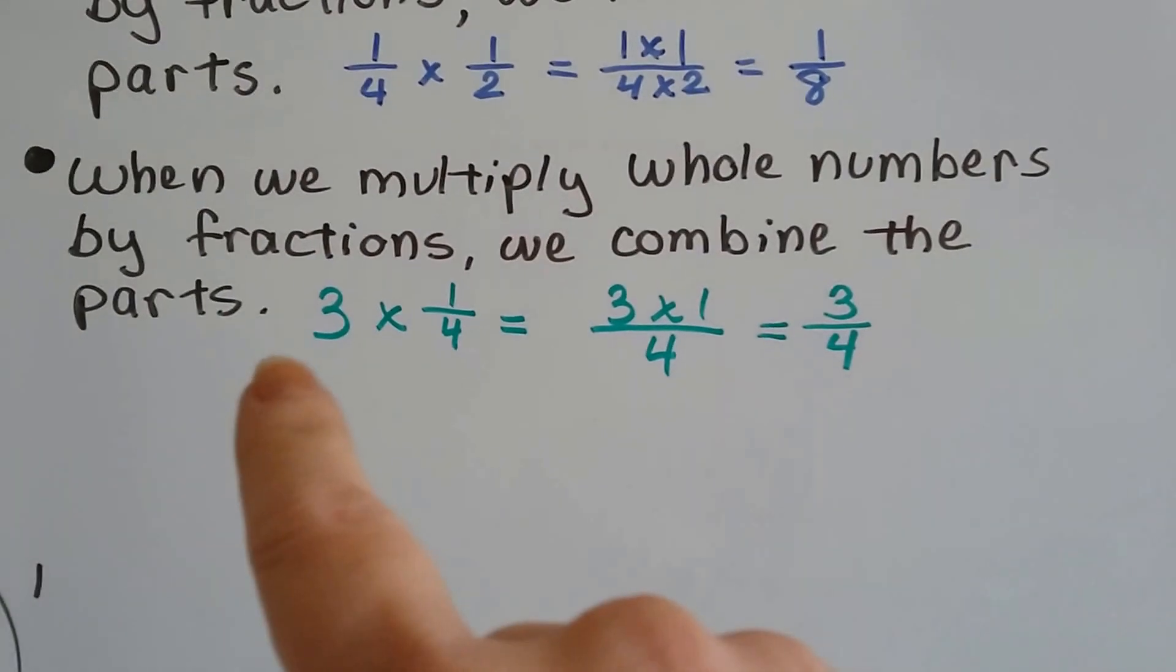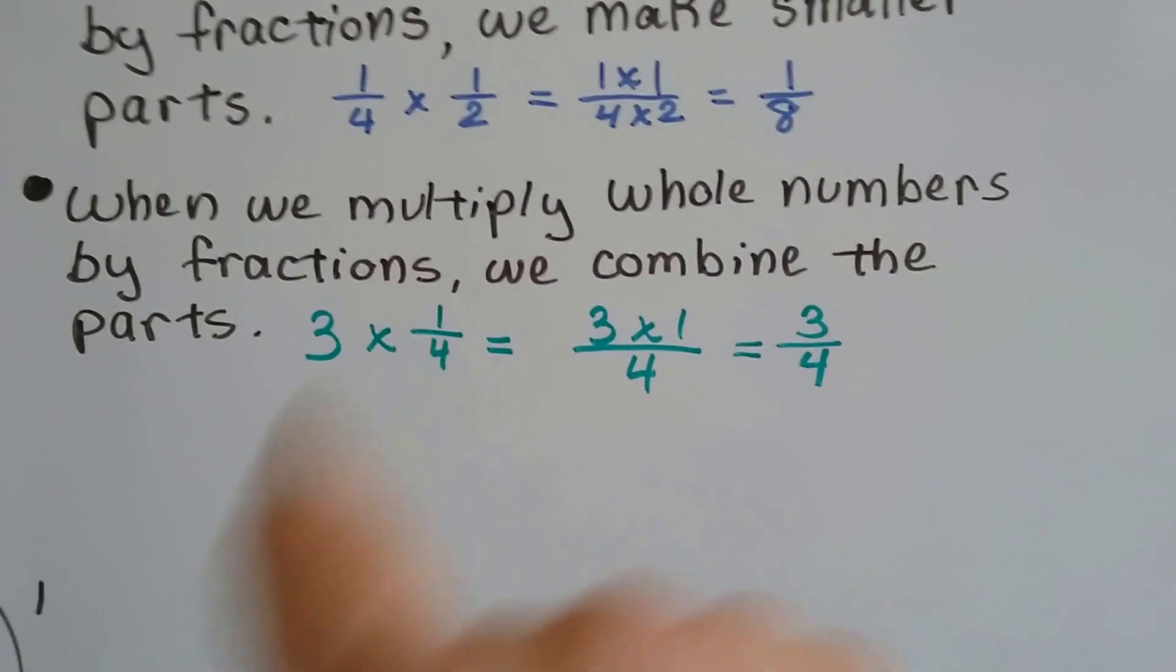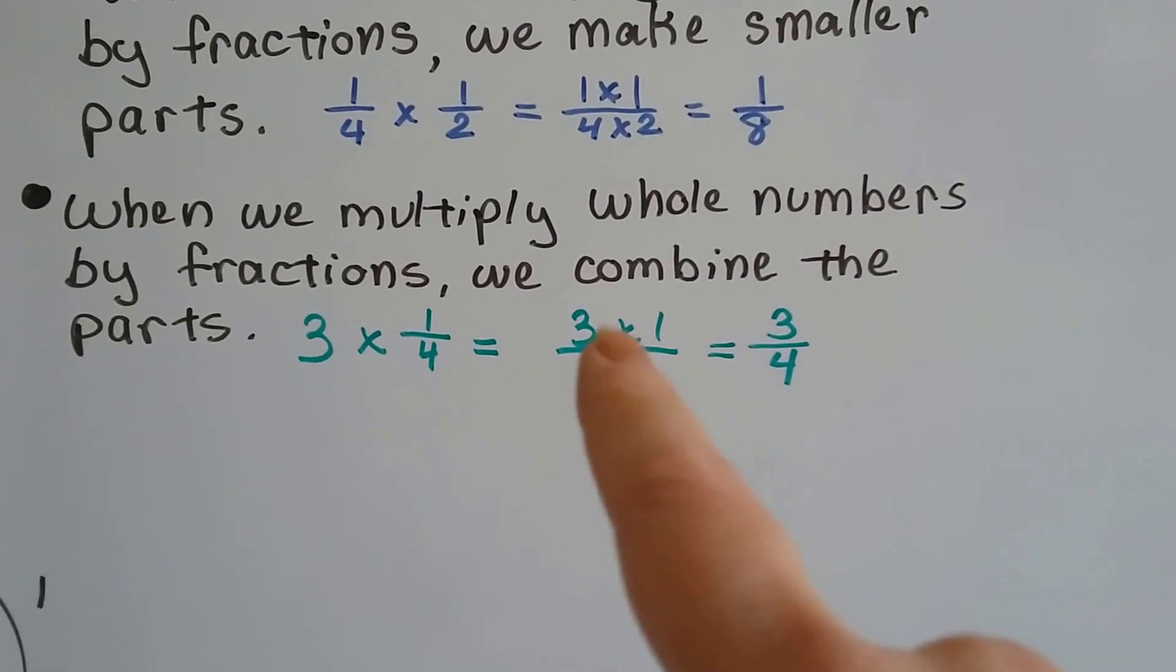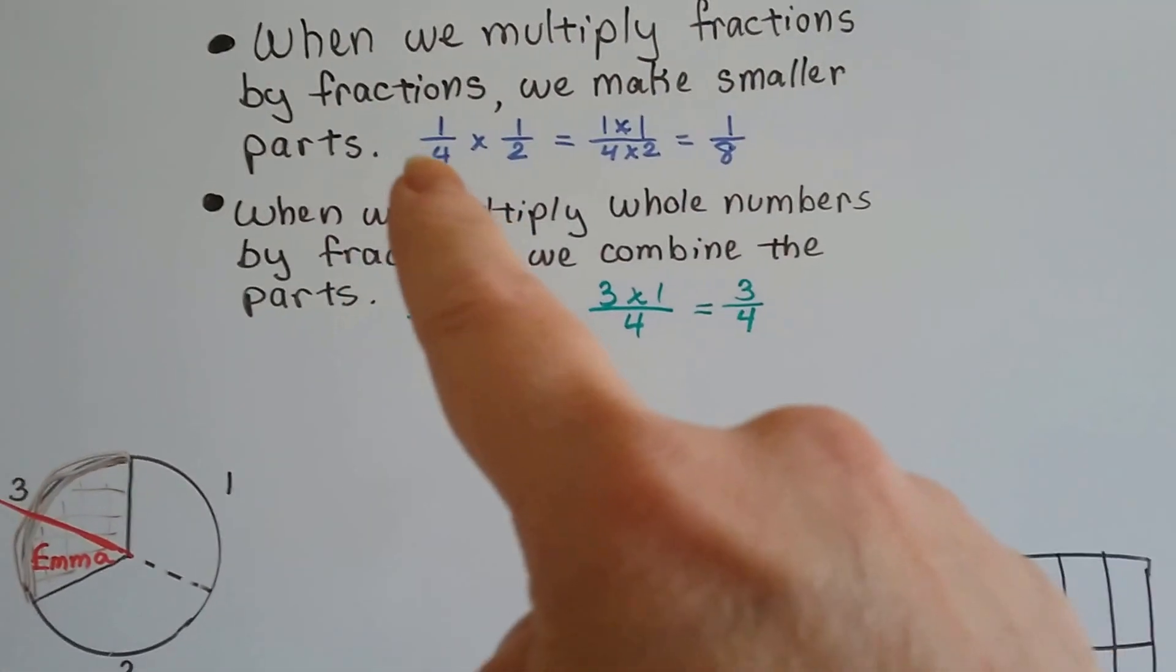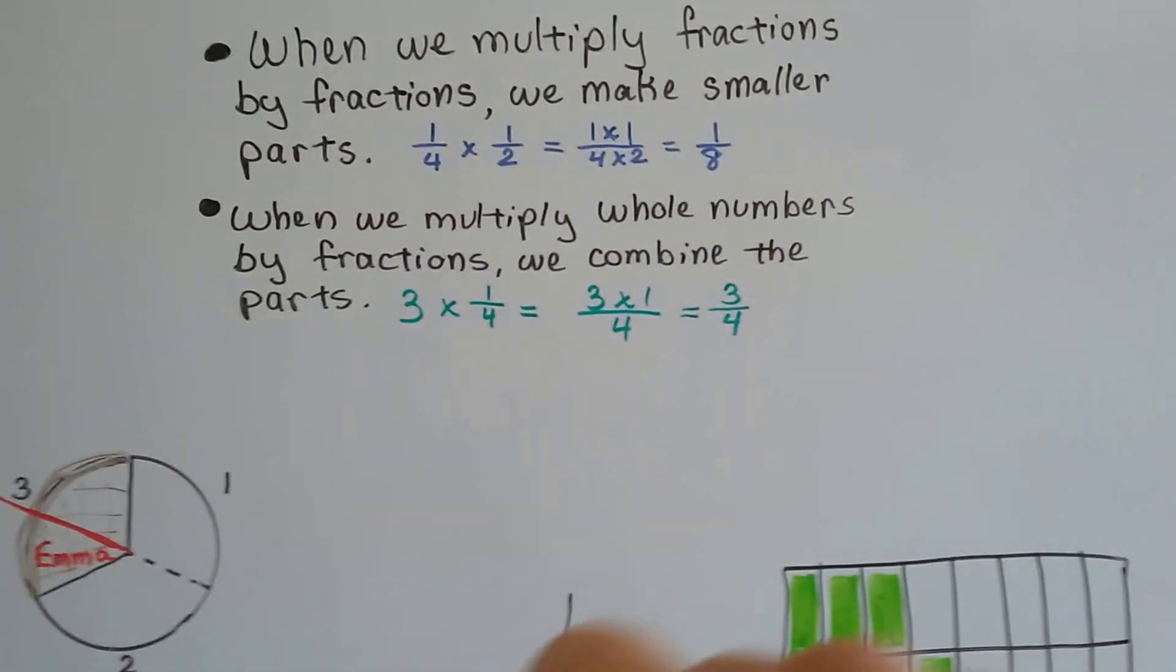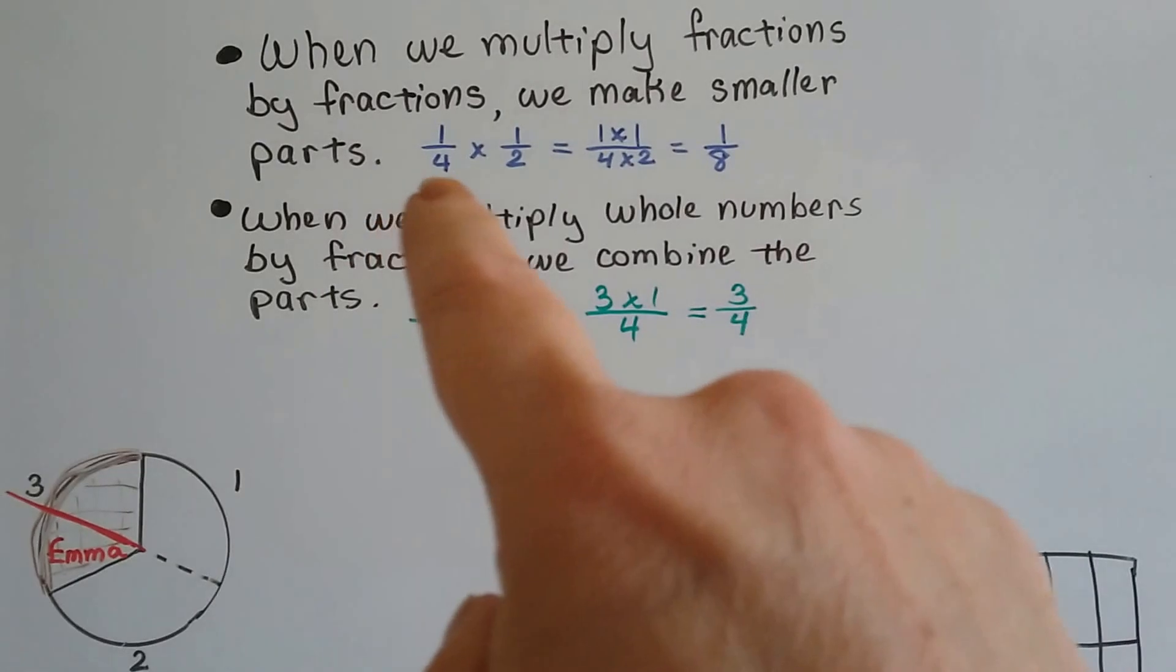When we multiply a whole number by a fraction, we're throwing the whole number up on top of the numerator and multiplying it. When we multiply a fraction by a fraction, we're just multiplying the numerators to each other straight across and the denominators to each other straight across.